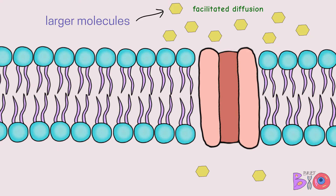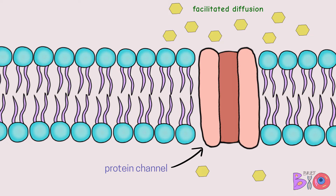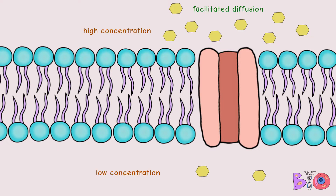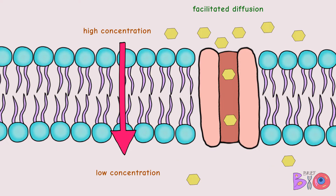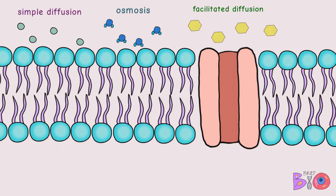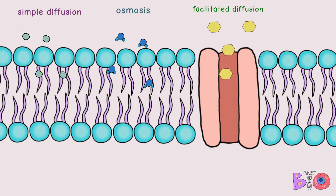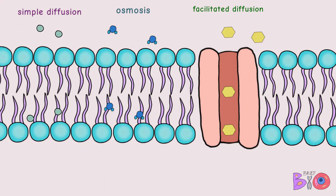The last type of passive transport is facilitated diffusion. This is the movement of larger molecules such as glucose through a protein channel embedded in the cell membrane. These molecules are too large to pass directly through the membrane. They also move from a higher concentration at the top to a lower concentration at the bottom.